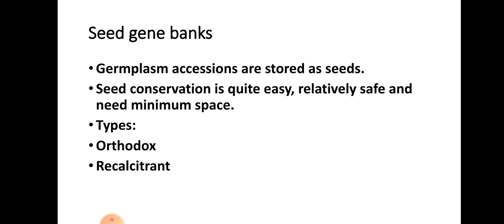Seeds are basically of two types: orthodox seeds and recalcitrant seeds. Orthodox seeds are desiccation tolerant — they can be dried to a moisture content of 5% or lower without losing their viability. The storage duration of orthodox species is longest, as they are produced by cereals, legumes, some grasses, and many vegetables.